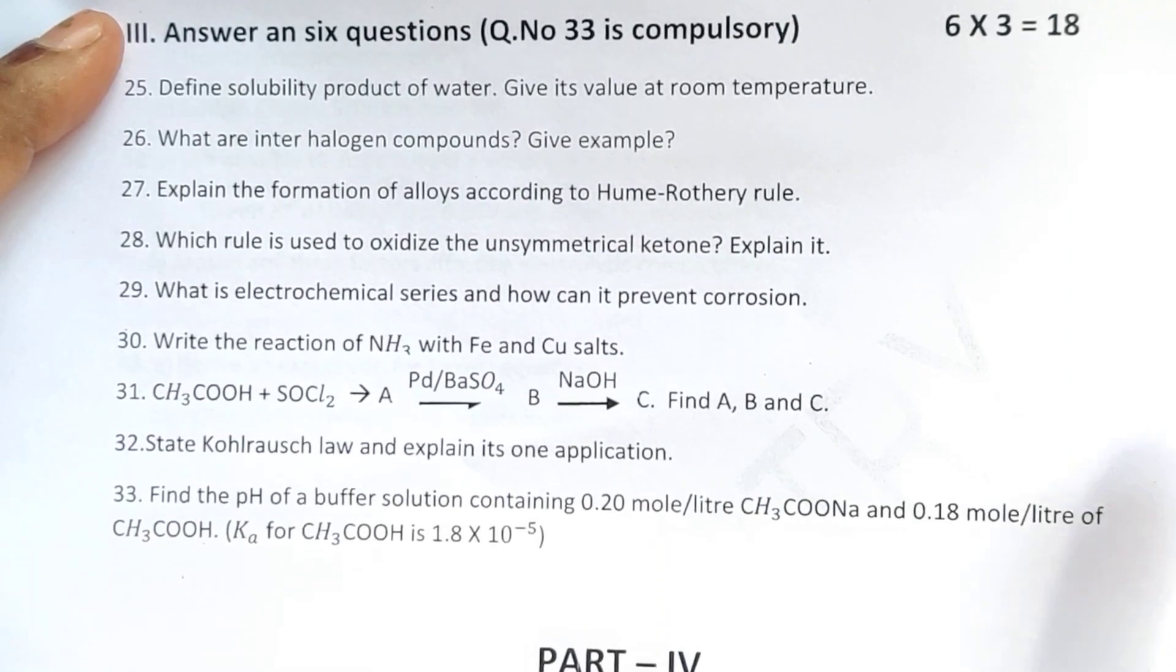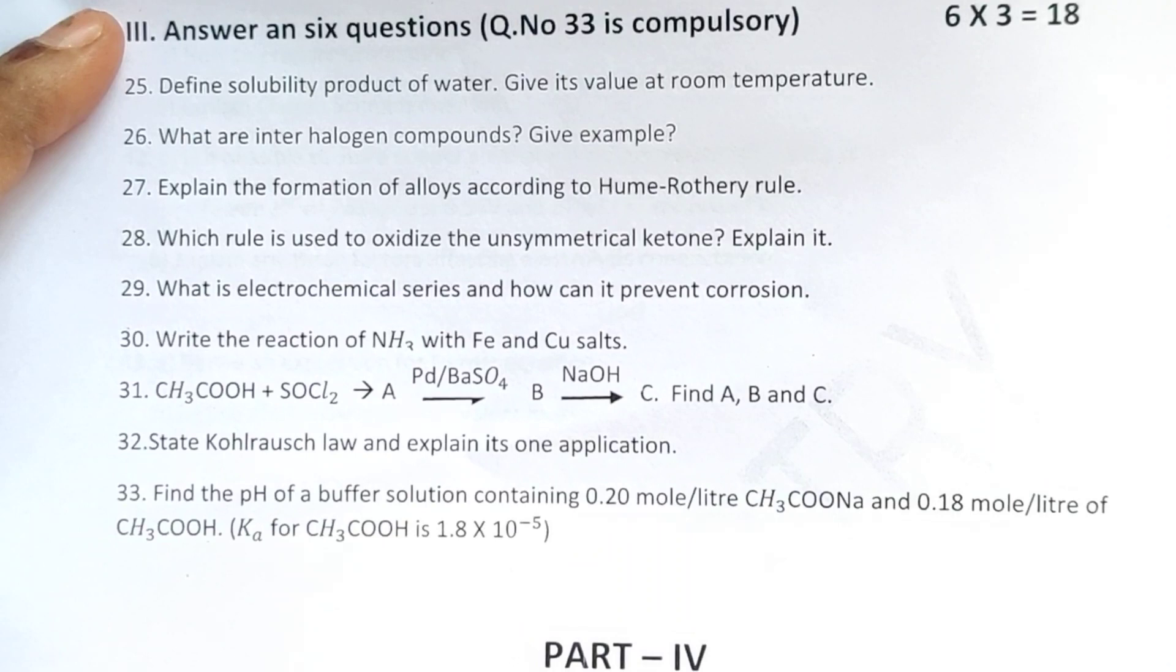Then, 31st equation-based question. State Kohlrausch law and explain its one application. Find the pH of a buffer solution containing 0.20 mole per liter CH₃COONa and 0.18 mole per liter of CH₃COOH.